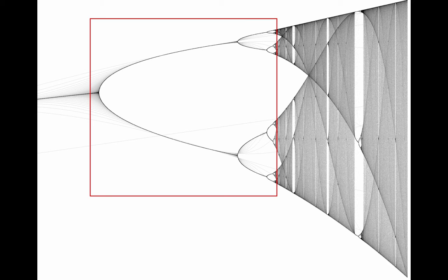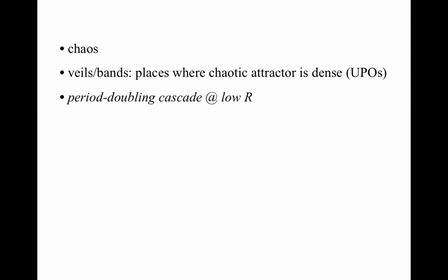There's this bifurcation sequence from a fixed point to a 2-cycle to a 4-cycle to an 8-cycle and so on — that's called a period doubling cascade. There are also regions of order within the chaos: for some r values there was chaos, but then raising r a little bit took you back into a periodic regime. This particular periodic regime starts with a 3-cycle, then goes to a 6-cycle and a 12-cycle and so on — another period doubling bifurcation sequence.